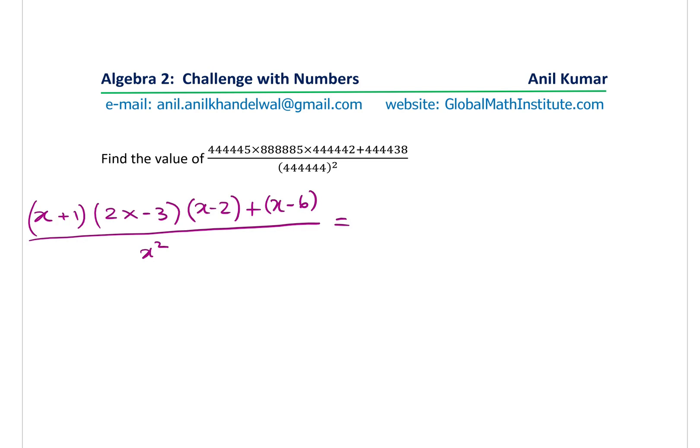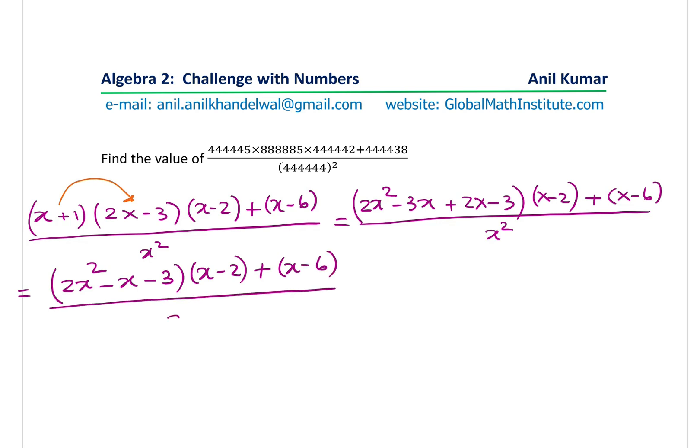We can now apply the distributive property, multiplying these two polynomials. We get 2x squared minus 3x plus 2x minus 3 times x minus 2 plus x minus 6 divided by x squared. Now that simplifies to 2x squared minus x minus 3 times x minus 2 plus x minus 6 divided by x squared.